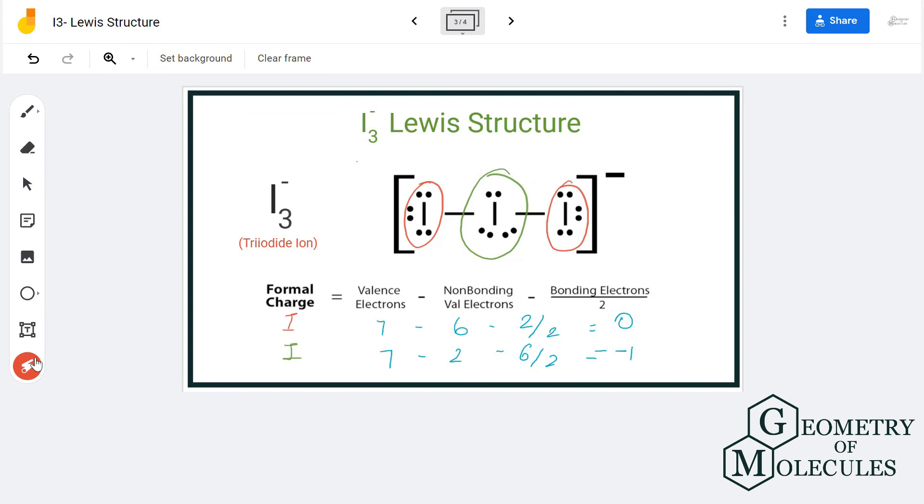What you can add is brackets to show that it is an ion with a negative charge. So this is the Lewis structure for triiodide ion.